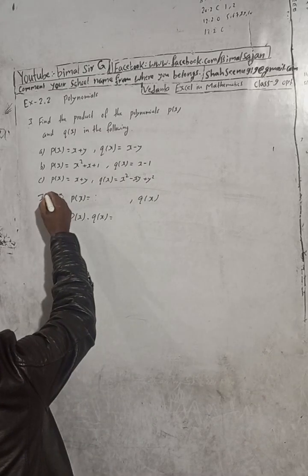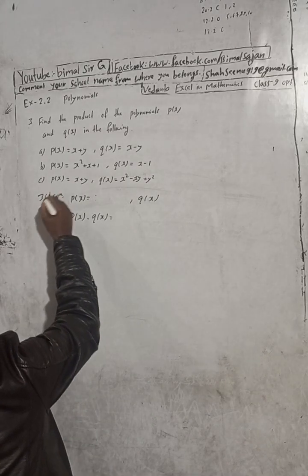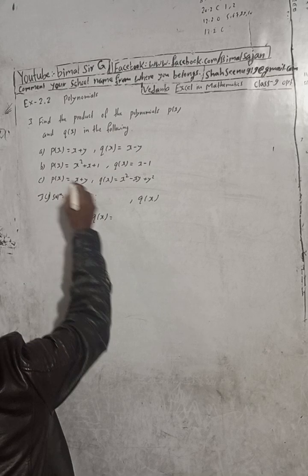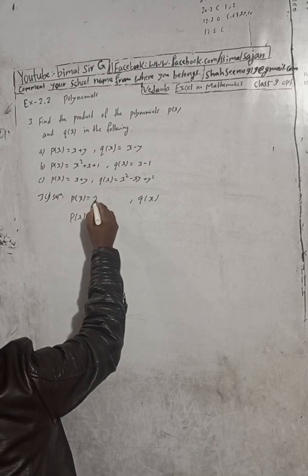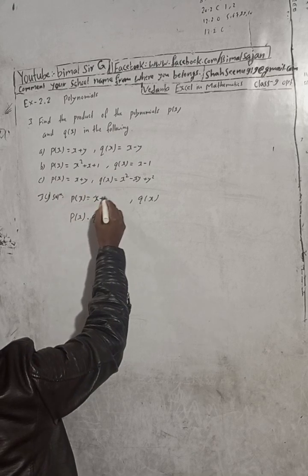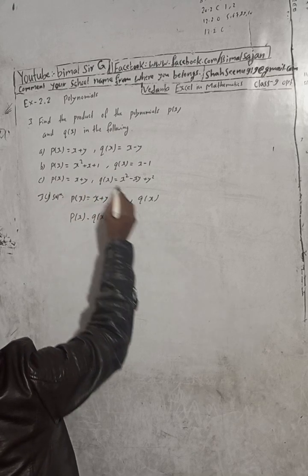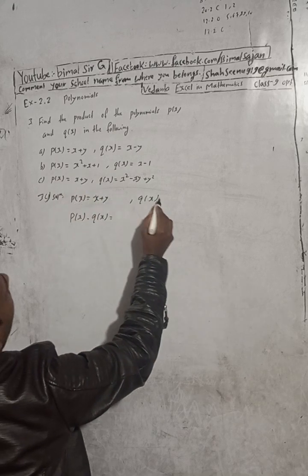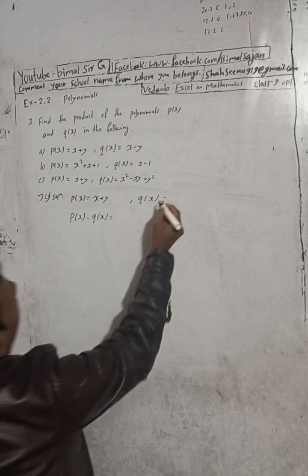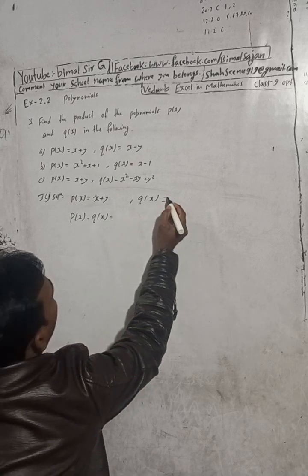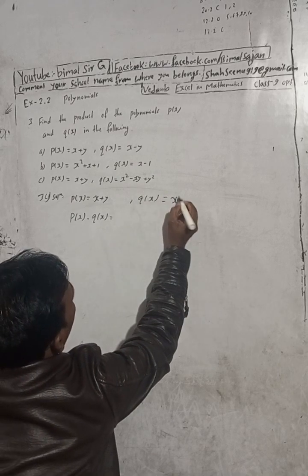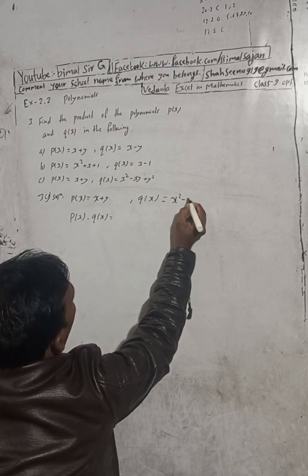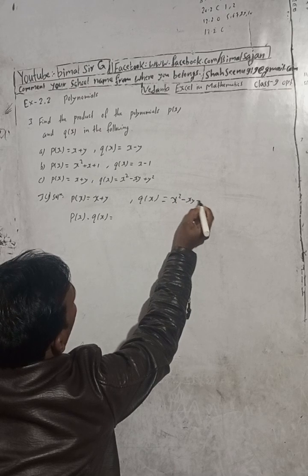3C: P(x) is equal to x plus y, and Q(x) is equal to x squared minus xy plus y squared.